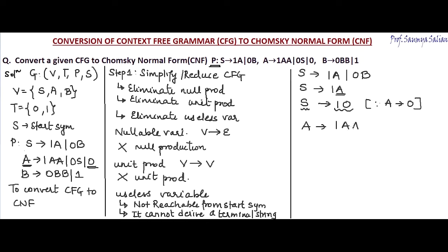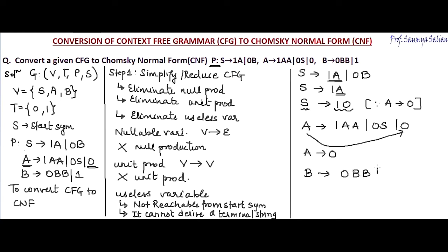Checking variable A: is A reachable from start symbol S? Yes, there is a production rule S deriving 1A. Can A derive a terminal string? Yes, A deriving 0. So A is not a useless variable. Checking variable B: is B reachable from start symbol? Yes, via S deriving 0B. Can B derive a terminal string? Yes, B deriving 1. So B is not useless either.